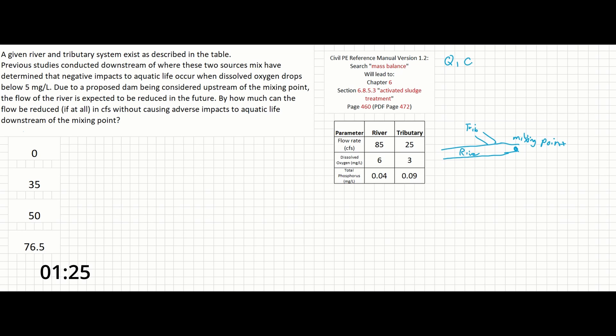Q1 C1 plus Q2 C2 equals Q3 C3, where Q3 is going to be a combination of Q1 plus Q2.